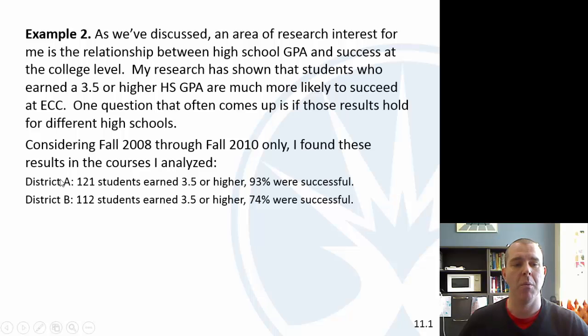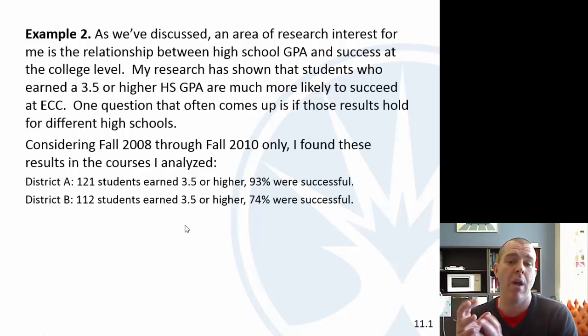93% of students who did well in high school there ended up being successful in their first course here at ECC. Different district, only 74% were successful. Clearly those are different, but is there a statistical difference there? Could it just be random that if I did a different three-year range I would get different results? That this just could happen randomly. So we're going to do a confidence interval for the difference in the proportions.